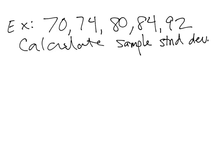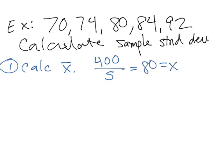I'm going to work through five steps. Step one is to find x-bar, the mean of the data set, because that's part of creating our table. We add 70, 74, 80, 84, and 92 together, which gives us 400. Because there are five values, we divide by 5: 400 divided by 5 gives a mean of 80. So x-bar equals 80.